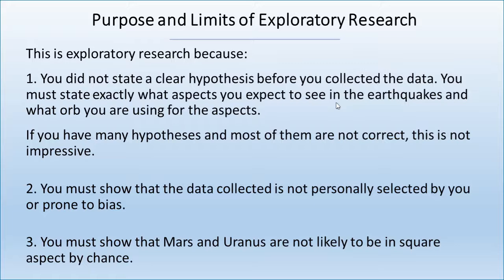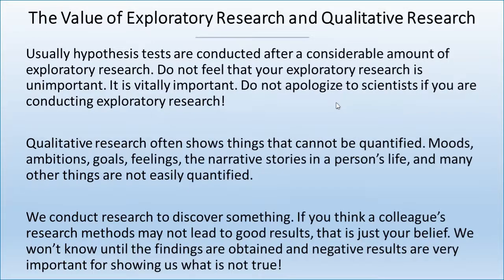Number three: you also need to show that the Mars square Uranus is not likely to occur by chance. It may be that because the planets turn retrograde and direct, that aspect occurs more often by chance anyway. That's what we call comparing to a control group. The control group doesn't have to be literally a group of charts, but some way of showing that compared to other groups or random possibilities, you really found something. That's what distinguishes a hypothesis test from other kinds of research.